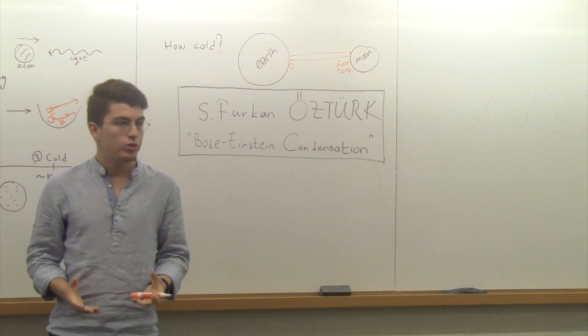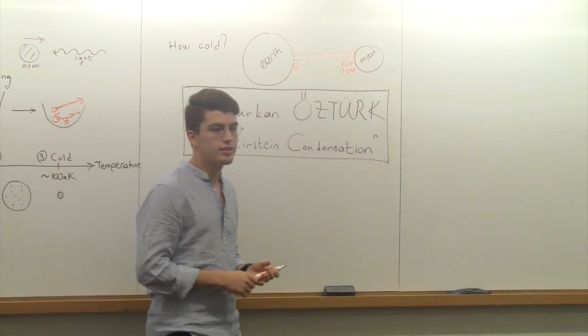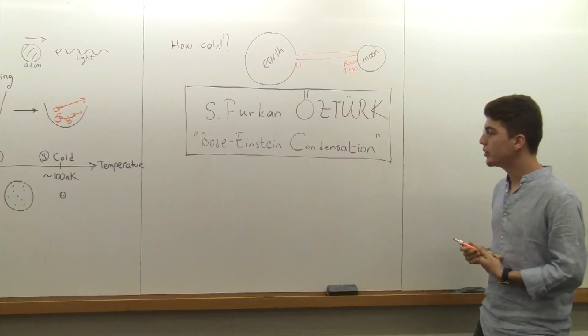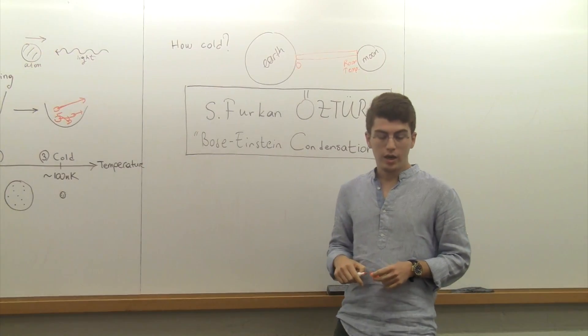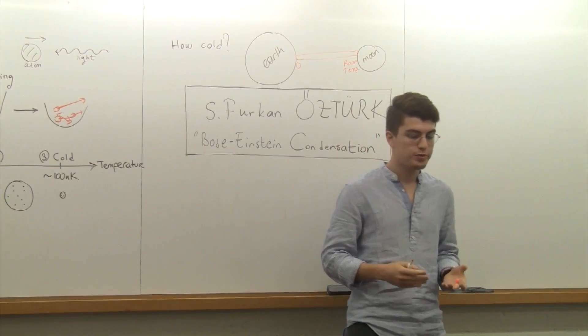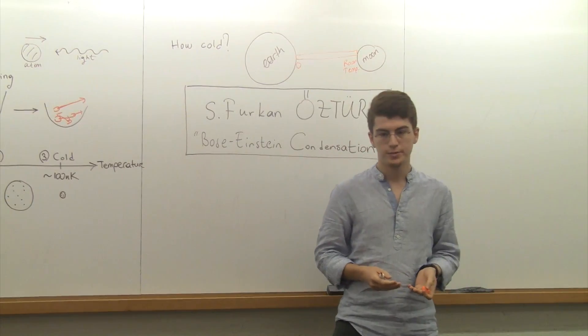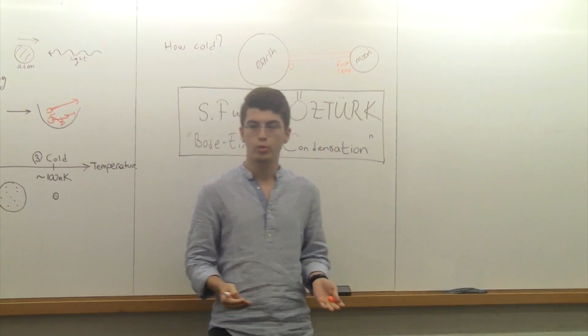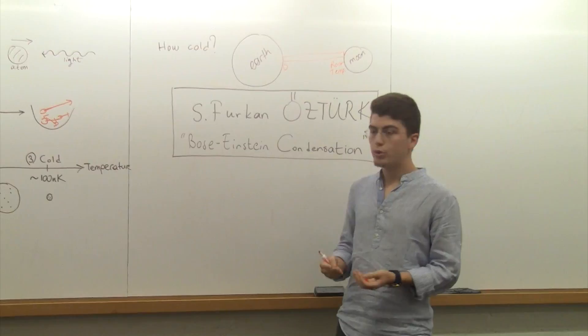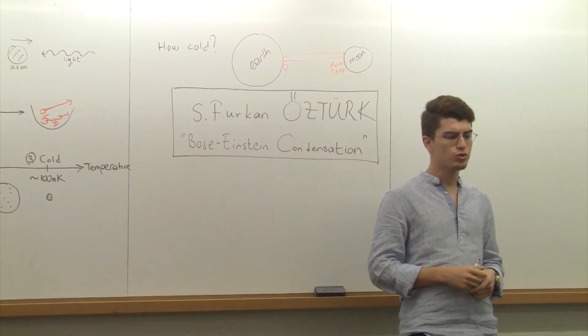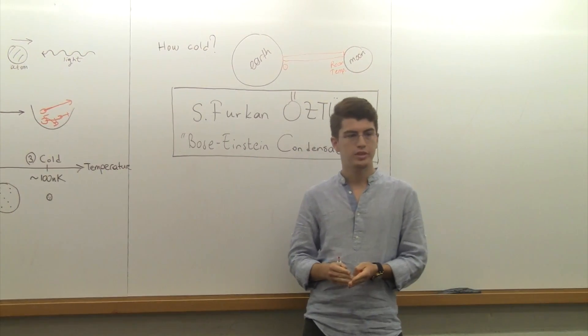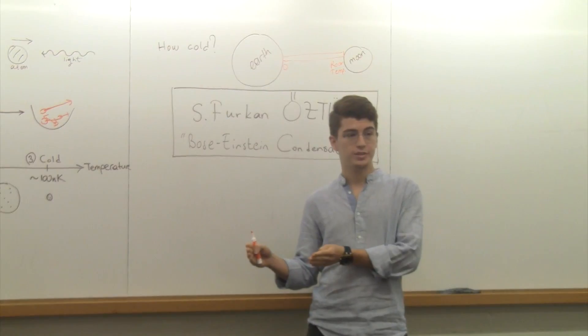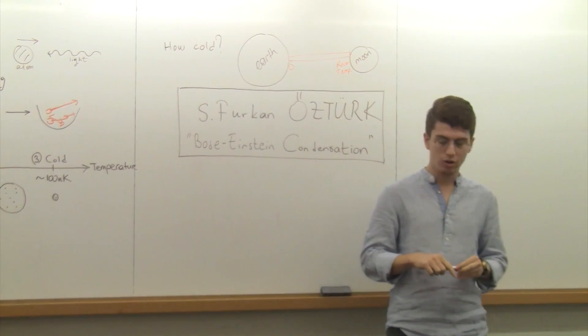But why do we do this? Apply several techniques, a bunch of technical work, a lot of money - why does it matter? It turns out that Bose-Einstein condensate opens a new way to explore fundamental questions in physics. It became a tool to probe new materials that are technologically important. I'll give you the most important example: superconductors. Superconductors are basically materials in which electricity - the electrons - move without any resistance. But how come? How are they related?